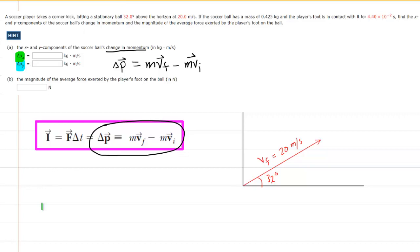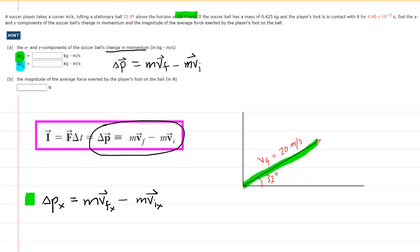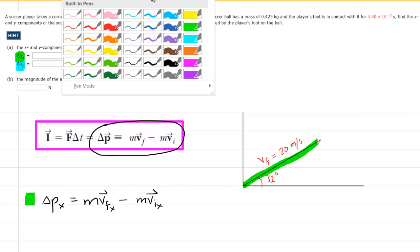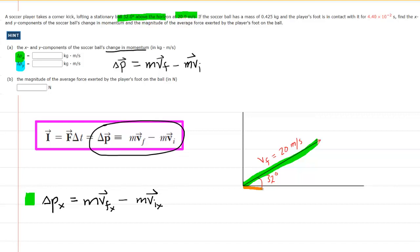Let's examine the change in momentum in the x direction, symbolized as delta p with a subscript x. Based on our equation, that would be the mass of the object multiplied by the final velocity in the x direction only, minus the mass multiplied by the initial velocity in the x direction only. To figure out the velocities in the x direction, we have drawn a picture showing the final velocity of the soccer ball at 20 meters per second, at 32 degrees above the horizon. We break this up into x and y components, with an x component pointing right and a y component pointing straight up, forming a right triangle.